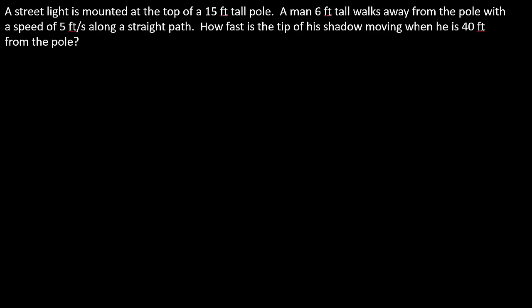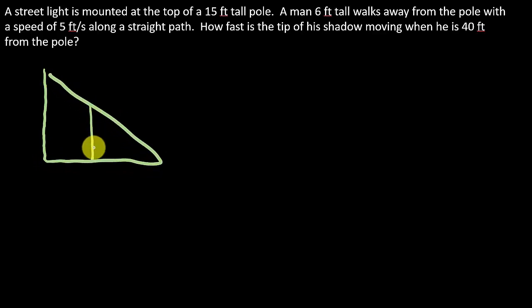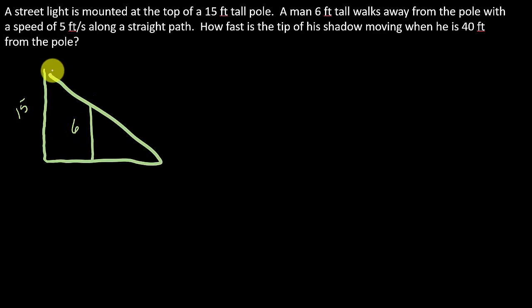So first thing, let's go ahead and draw a picture. We've got the street light right here and it is 15 feet tall. The man right here is 6 feet tall, and the light is shining down and it casts a shadow. He's walking away from the pole with a speed of 5 feet per second along a straight path. They want to know how fast is the tip of the shadow moving — here's the tip of the shadow right here.